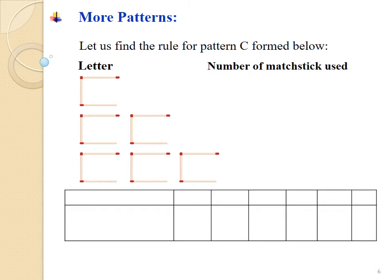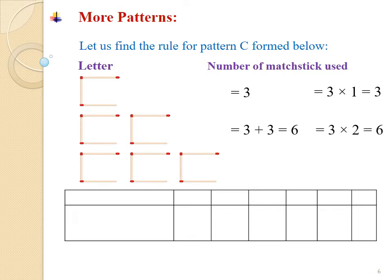Let us now look at one more pattern and try to generalize it. Let us find the rule for pattern C. When one C is formed, 3 matchsticks are used. When two Cs are formed, 6 matchsticks are used. When three Cs are formed, 9 matchsticks are used.